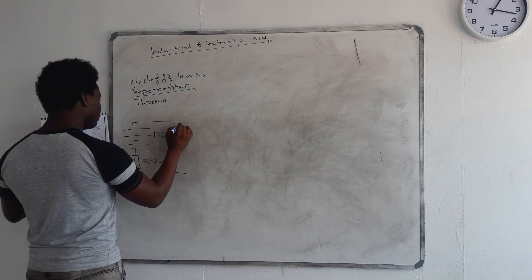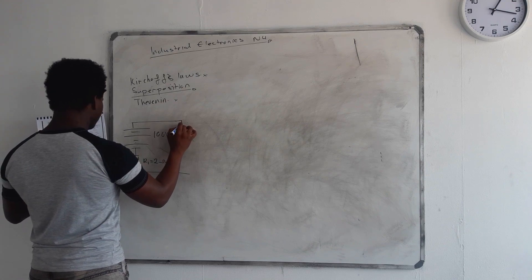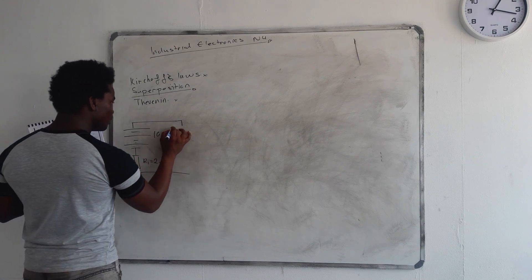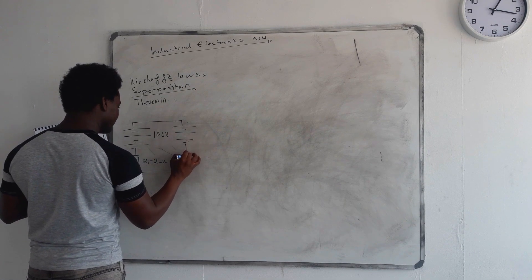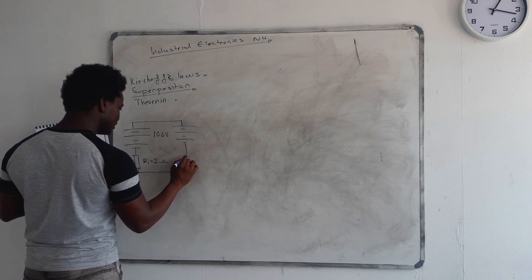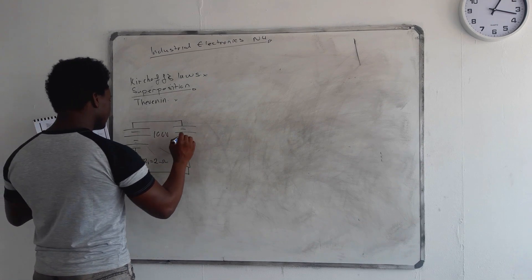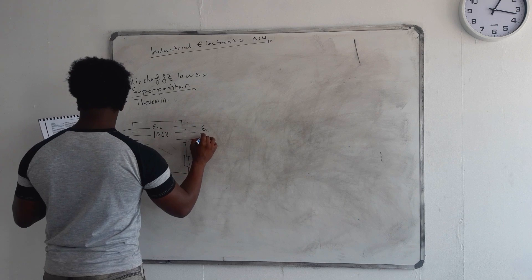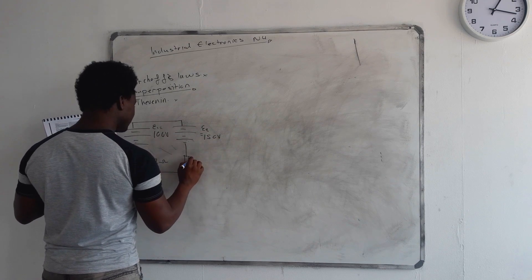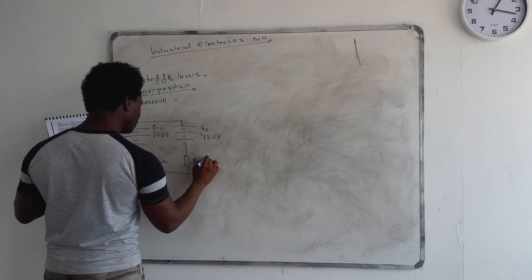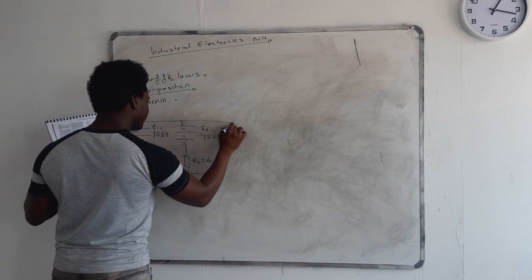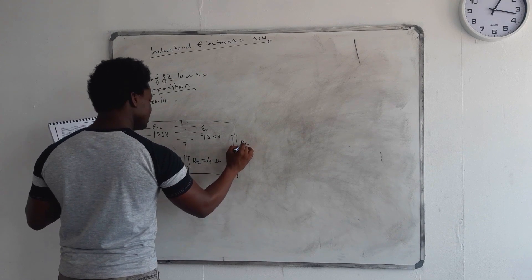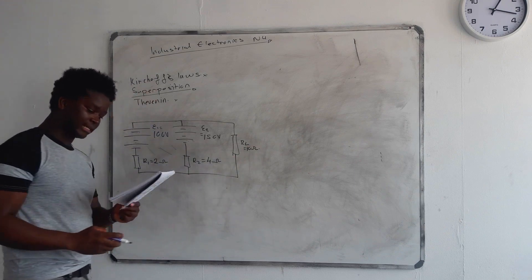Then you move on to the second one. Pay attention to the polarity of your battery. You've got your resistor here as well. This is E1, then this is E2 which equals 150 volts, then this is R2 which equals 4 ohms. Then we get to our RL — our load resistor — given at 10 ohms. That's our circuit.